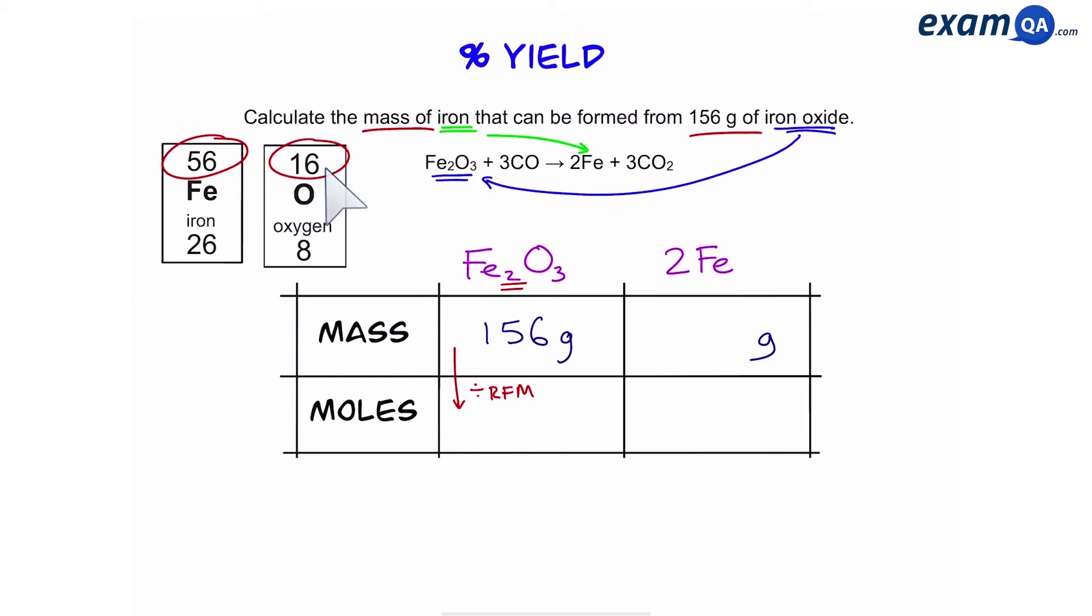However, in iron oxide we have two irons and three oxygens. So that means we're going to do 56 times 2 plus 16 times 3, which gives us a final relative formula mass of 160 for iron oxide. Mass divided by molar mass will give us moles, which is 0.975.